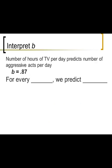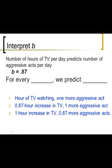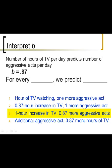Here's another one. The number of hours TV per day predicts the number of aggressive acts per day. B is 0.87. Hours of TV per day does the predicting, so this is X. And the number of aggressive acts is going to be Y. The answer is: for every one hour increase in TV watching, we predict 0.87 more aggressive acts. It's okay that we took something discrete like an aggressive act and made it 0.87. The regression equation just needs to tell us what the line looks like.